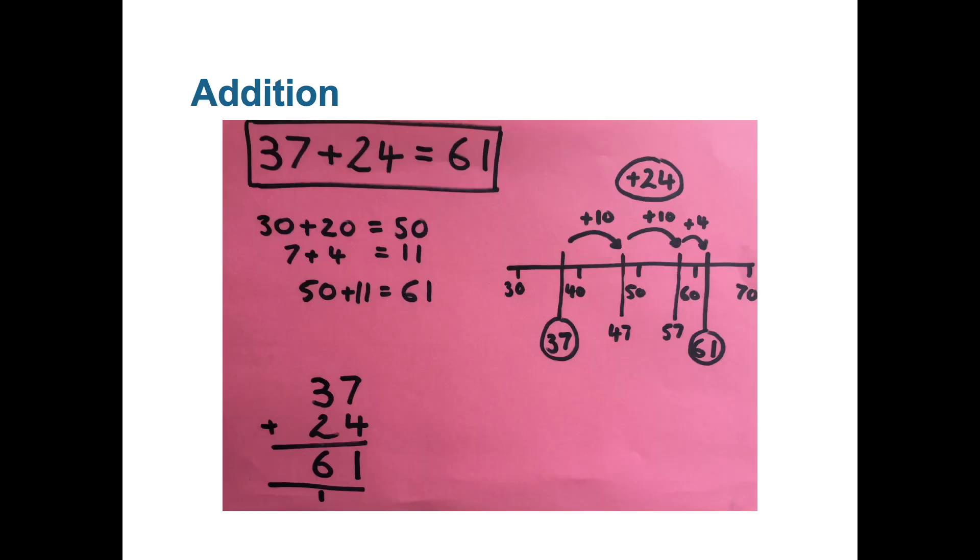You can see here some different ways of how to add two numbers such as 37 and 24 which can be done as a mental calculation or using pen and paper. Your son or daughter will be familiar with these methods or other ones that they have been taught at school.